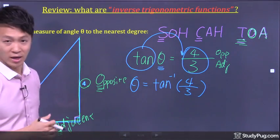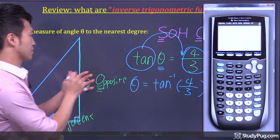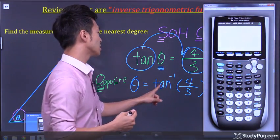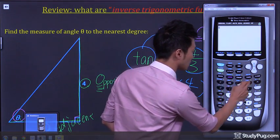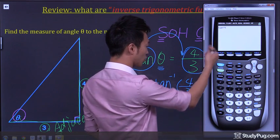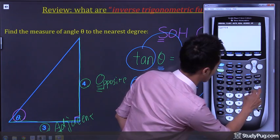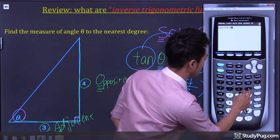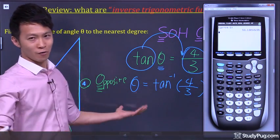So now, let's take our calculator. Good. And we just have to type in tangent negative 1 of 4 over 3. So tangent negative 1 right here. So tangent negative 1 of 4 divided by 3. 4 over 3 is equal to 53 degree.